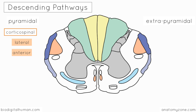You may notice the significance of the naming of these tracts. The spinothalamic and spinocerebellar tracts both follow the same convention: the first part of the name relates to where the tract begins, and the second part relates to where it ends. So spinocerebellar starts in the spinal cord and projects to the cerebellum; spinothalamic starts in the spinal cord and projects to the thalamus — so you know they are ascending tracts. The corticospinal tract starts in the motor cortex and projects down into the spinal cord, so it's a descending tract. There are always clues and hints in the names.